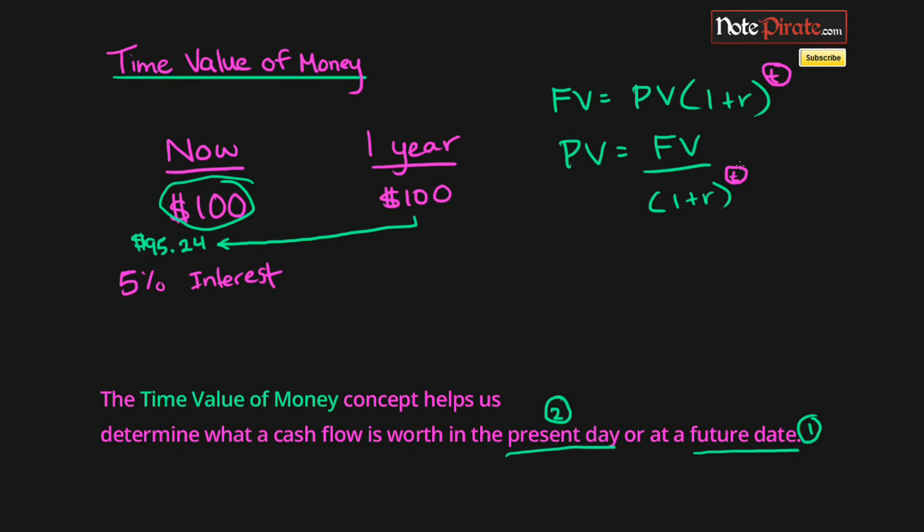You can clearly see that these two, even though they're different equations, are both just manipulated from the same variables. Hopefully you understand the time value of money and how we're trying to convert it to the present day or the future day to compare. I'll see you in the next one where we'll be talking about probably more examples from time value of money.